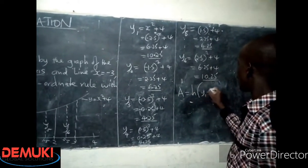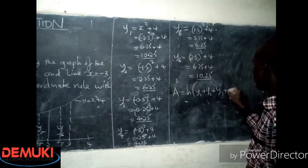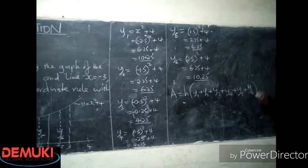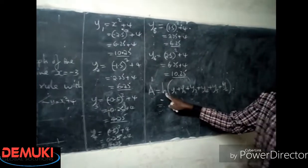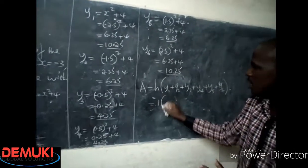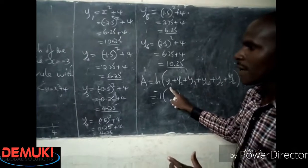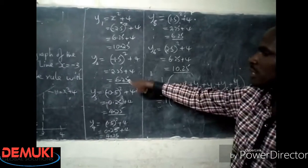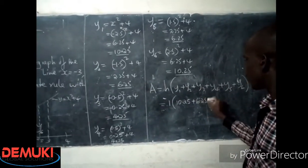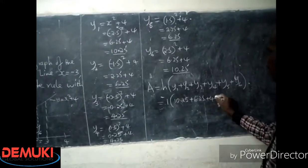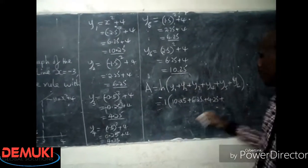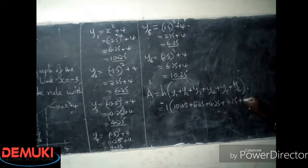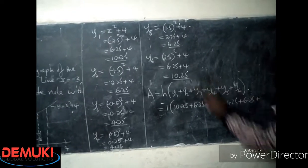So I'll say my area, which should be h into y1 plus y2 plus y3 plus y4 plus y5 plus y6. So this will be h is 1, the width is 1, into my y1 is 10.25, y2 is 6.25, y3 I have it here 4.25, y4 is 4.25, y5 is here 6.25, and lastly y6 is 10.25.